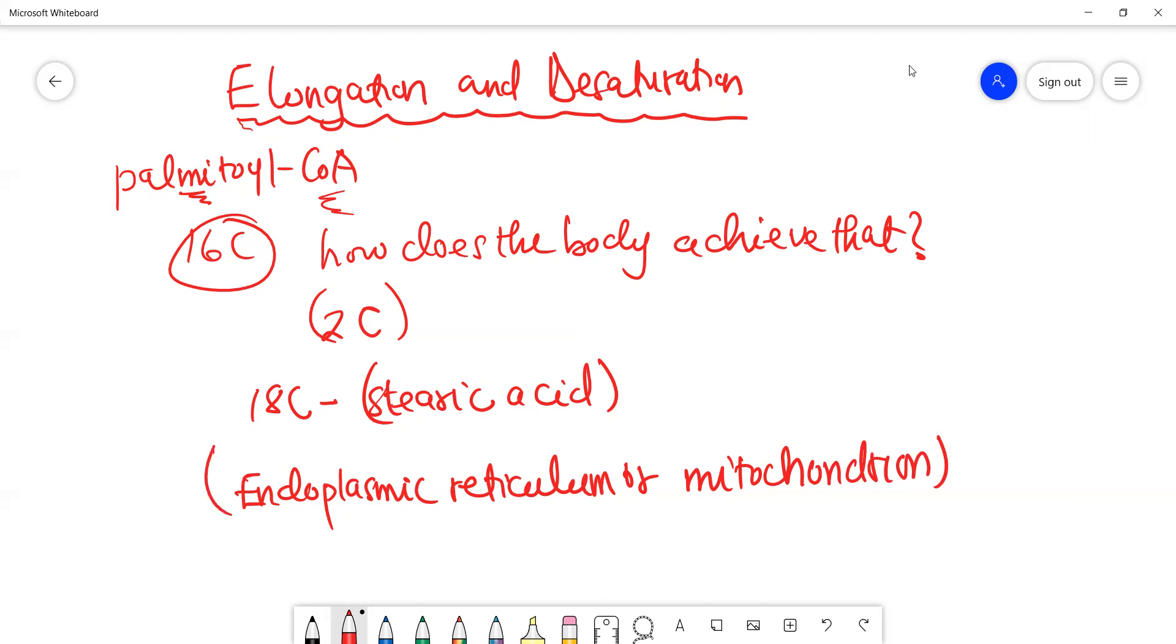So this addition of the two carbons - most of the extension is limited to two carbons, forming stearic acid either here or here. We have fatty acid elongases along these pathways. They ensure that there is addition of these two-carbon units to fatty acids, from palmitic acid to form stearic acid.